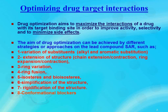For improving the pharmacodynamic properties, one has to optimize the drug-target interactions. The aim is to maximize the interactions of a drug with its target binding site in order to improve the activity, selectivity, and to minimize the side effect. Designing a drug that can be synthesized efficiently and cheaply is another priority. The aim of drug optimization can be achieved by different strategies on the lead compound structure-activity relationships such as variation of the substituents, extension of the structure, ring variation, ring fusion, isosteres and bioisosteres, simplification of the structure, rigidification of the structure, and conformational blockers.